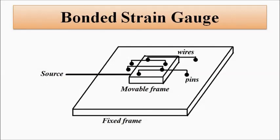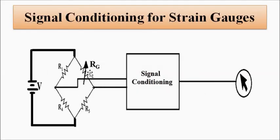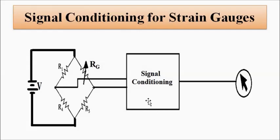Whenever there is a change in resistance, the Wheatstone bridge becomes unbalanced and there will be a current flow. This signal must then be passed through proper signal conditioning circuitry to amplify the signal, linearize the output, remove unwanted noise and interference signals, and perform frequency response matching, so that we get the desired signal without any loss. Then it is given to a digital readout, LCD display, or pointer scale arrangement.